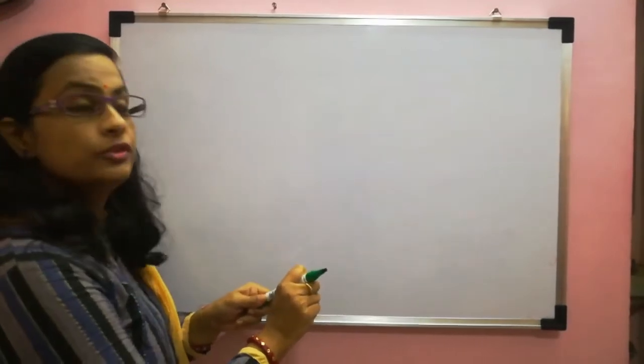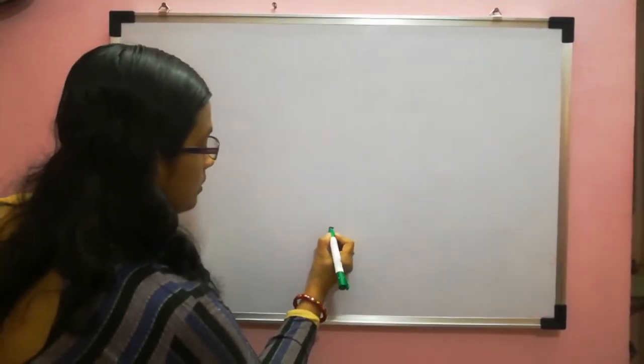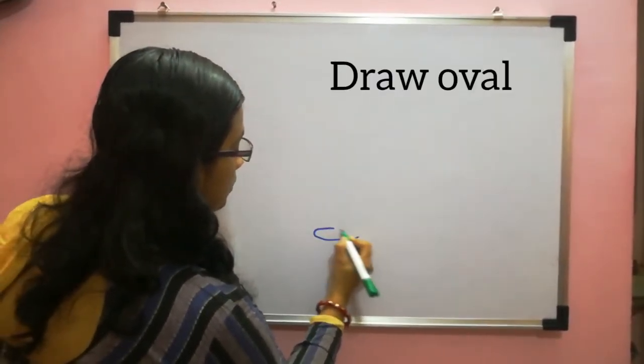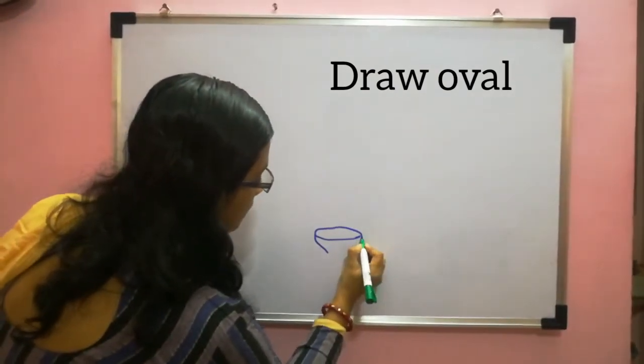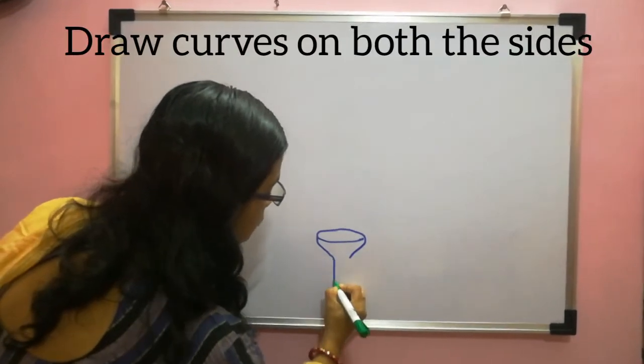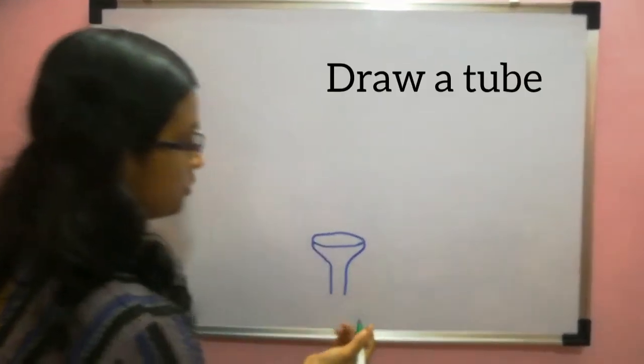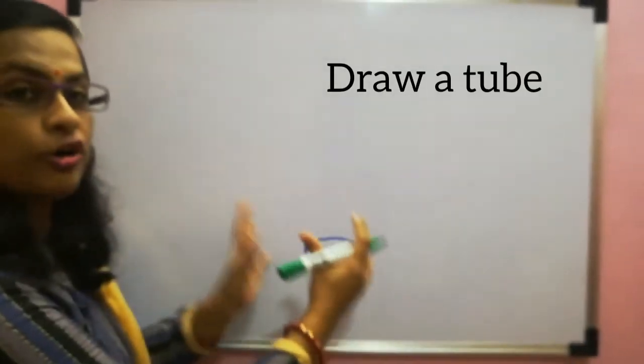First thing what you have to do is make an oval shape here down, a flat oval. Then make a small curve here, and then a tube, a small tube. So we have just made a base of the flower.